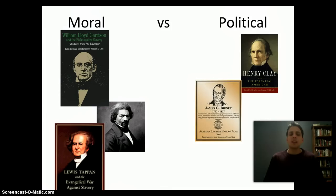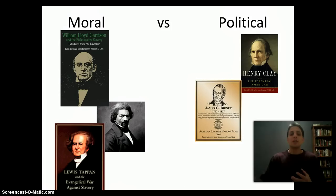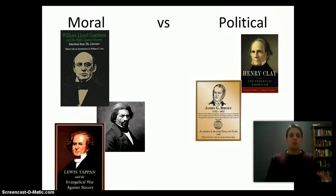Another person in this category of moral abolitionist would be Frederick Douglass. He's the founder of a newspaper called The North Star. Both Garrison and Douglass use their platforms and the media to try and persuade people to be against slavery. The last ones are the Tappan brothers, Arthur and Lewis Tappan. These two individuals are pretty wealthy, and they're going to help form the anti-slavery society. They're getting a lot of their bases from the evangelical movement and the Second Great Awakening.